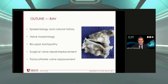This is the outline of the talk today. I'm going to touch briefly just as a reminder on the epidemiology and natural history of bicuspid aortic valve, including valve morphology. I want to touch a little bit on bicuspid aortic disease or aortopathy, and then we'll go through some of the surgical valve repair and replacement options, and then finally transcatheter valve replacement and talk about its role in bicuspid disease.